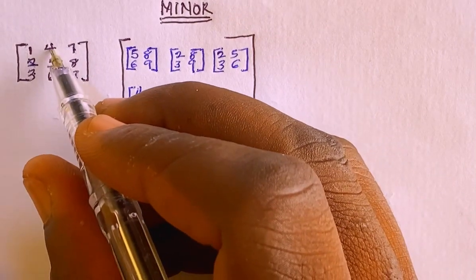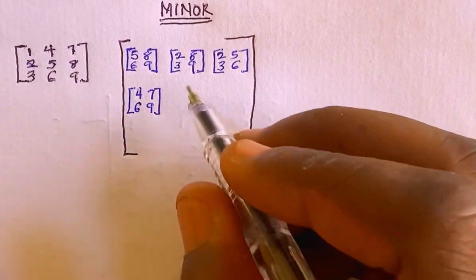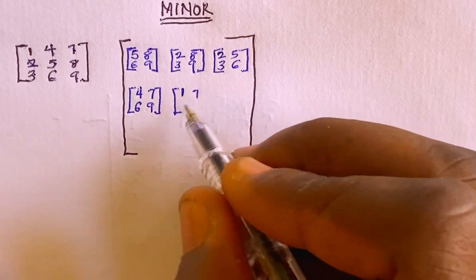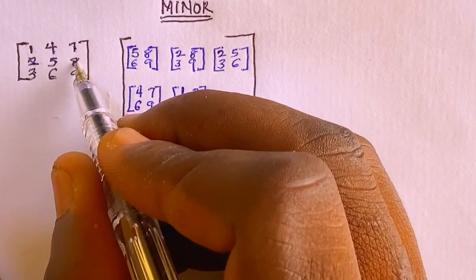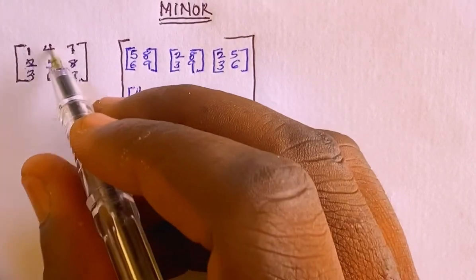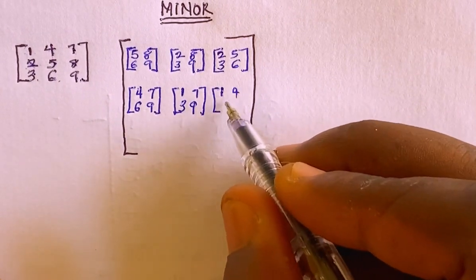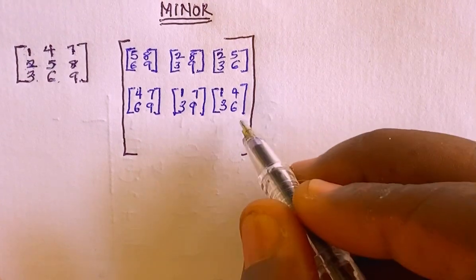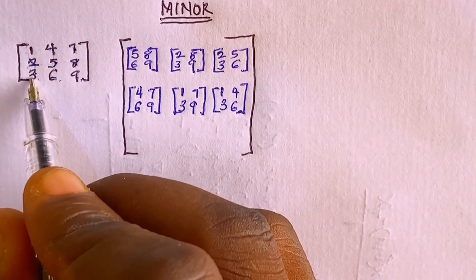Then I'll do the same thing for the element 4: I'll neglect everything in its row and column and I'm left with 2, 3, 8, 9. Then for the element 7, neglecting its row and column, I'm left with 2, 3, 5, 6. Then for the element in the first row and second column, which is 2, I'll neglect everything in its row and column and I'm left with 4, 6, 7, 9. Then for the element 5, neglecting its row and column, I'm left with 1, 3, 7, 9. Then for the element 8, neglecting its row and column, I'm left with 1, 3, 4, 6.